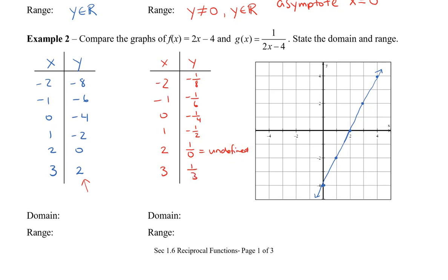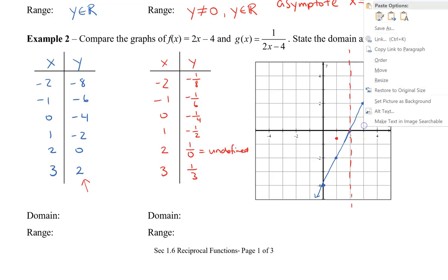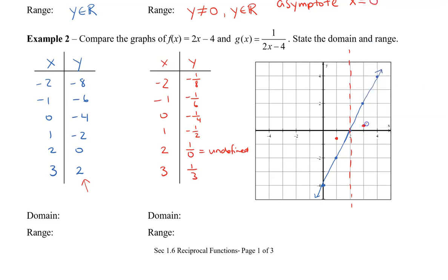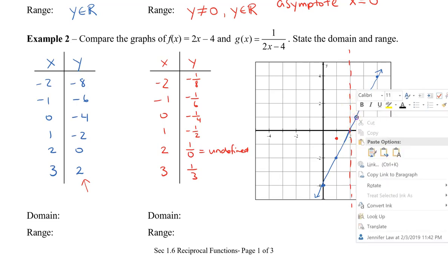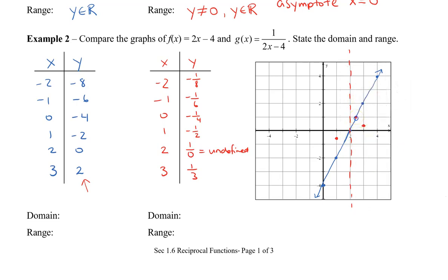I'm going to graph these points on the same graph, and I like to start with my asymptote because it gives a clear definition of where to stop the graph. At x equals 1, I get negative 1 half, and at x equals 3, I get 1 third. I'm going to pick some other points — I know that where y equals 1, the reciprocal is still 1, and the reciprocal of negative 1 will also be negative 1.